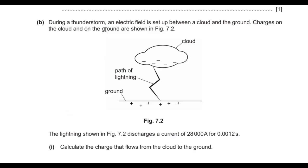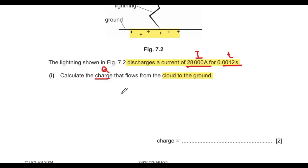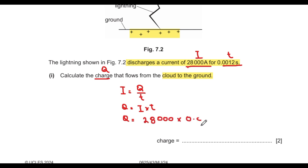Part B says: during a thunderstorm, an electric field is set up between the cloud and the ground. The cloud is negatively charged and the ground beneath it is positively charged — similar to the electric field between two charged plates. The lightning shown in figure 7.2 discharges a current of 28,000 amperes for 0.012 seconds. To calculate the charge: Q = I × t = 28,000 × 0.012 = 336 coulombs.